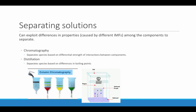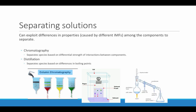Distillation is another method. This separates species based on a difference in boiling points. Here we see a solution that's being heated and then recondensed. Since the substances in the solution will have different boiling points, one will vaporize and condense at a different temperature than the other. The water has a much lower boiling point than the salt, so the water will evaporate and recondense and collect in the flask, while the salt remains behind since its boiling point is much higher.